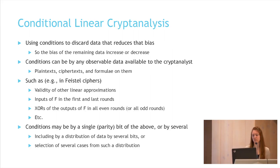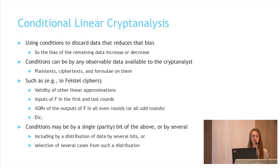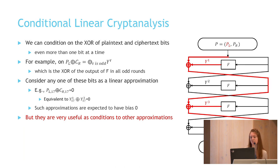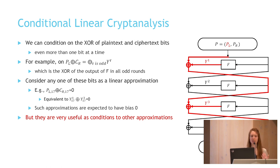We develop an extension of linear cryptanalysis that conditions linear approximations on other linear approximations. We use conditions to discard some of the data so the bias of the remaining data increases. Since the number of required known plaintexts is proportional to one over the bias squared, discarding some of the data may improve the number of needed known plaintexts. In the case of Feistel ciphers, we found conditions based on bits that are the XOR of the outputs of the f-function in the odd rounds, which are computable from the plaintext and the ciphertext.